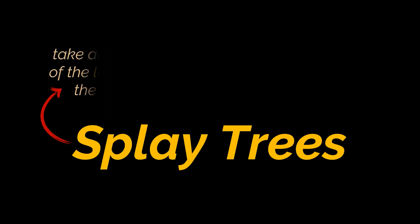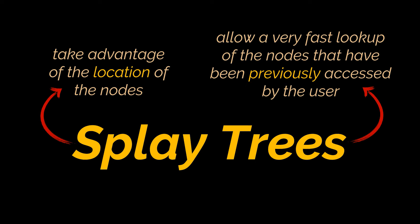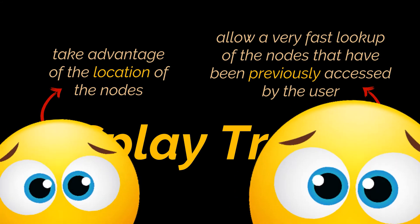A splay tree is an efficient implementation of a balanced binary search tree that takes advantage of the location of nodes inside a tree. This location allows a very fast lookup of nodes that have been accessed several times by the user. Splay trees are typically used in the implementation of caches, memory allocators, garbage collectors, data compression algorithms, and many more.